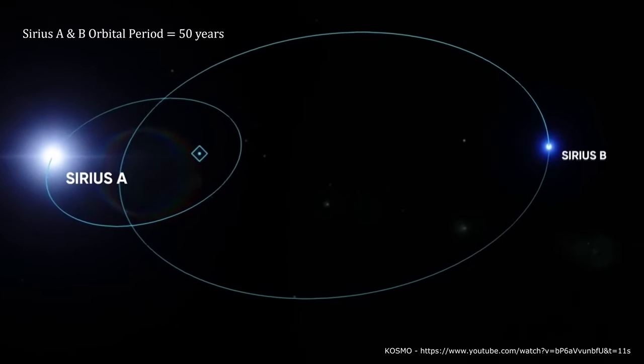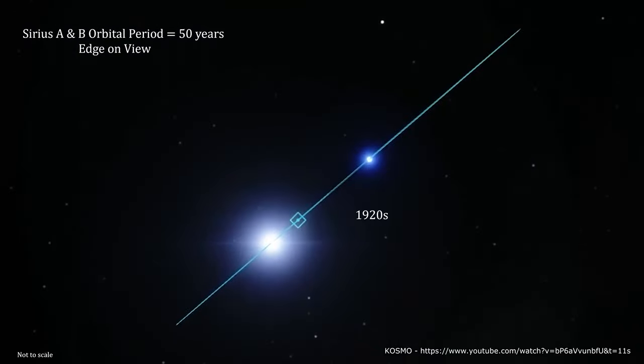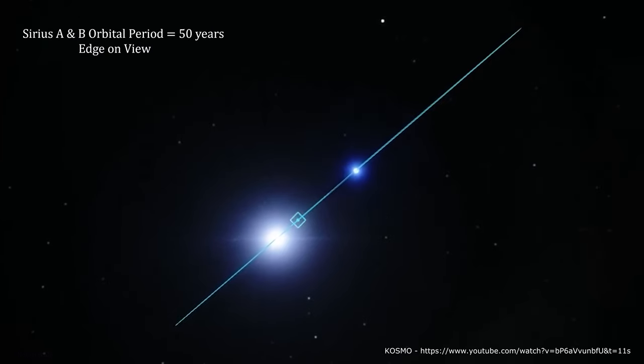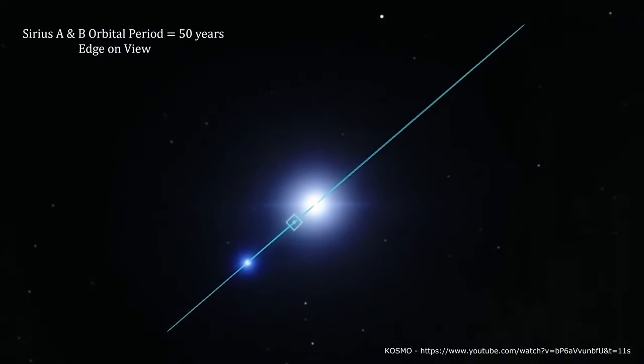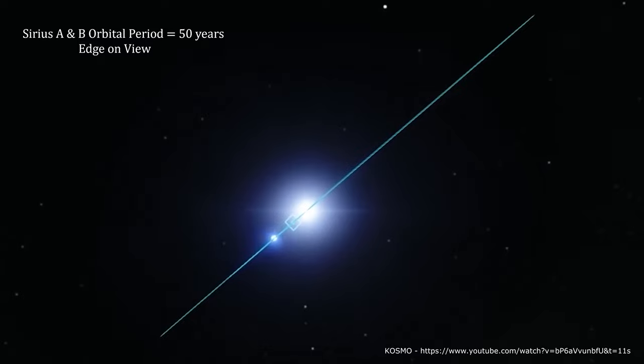This binary system's orbital period is 50 years. In the 1920s, when the first measurements of Sirius B's gravitational redshift were made, the two stars were close together on the sky, and the results were said to be contaminated by light from Sirius A.